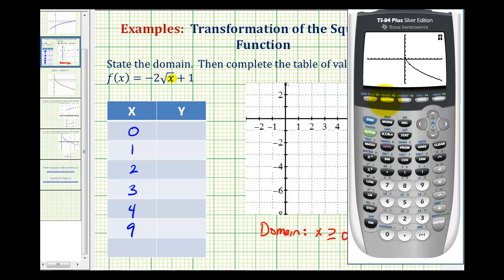let's press second window to check our table set. Let's make sure everything here is on auto. If it's not, we can just highlight auto and then press enter. Now if we press second graph, this brings up a table of values. We can scroll up and down to find the x values that we want.